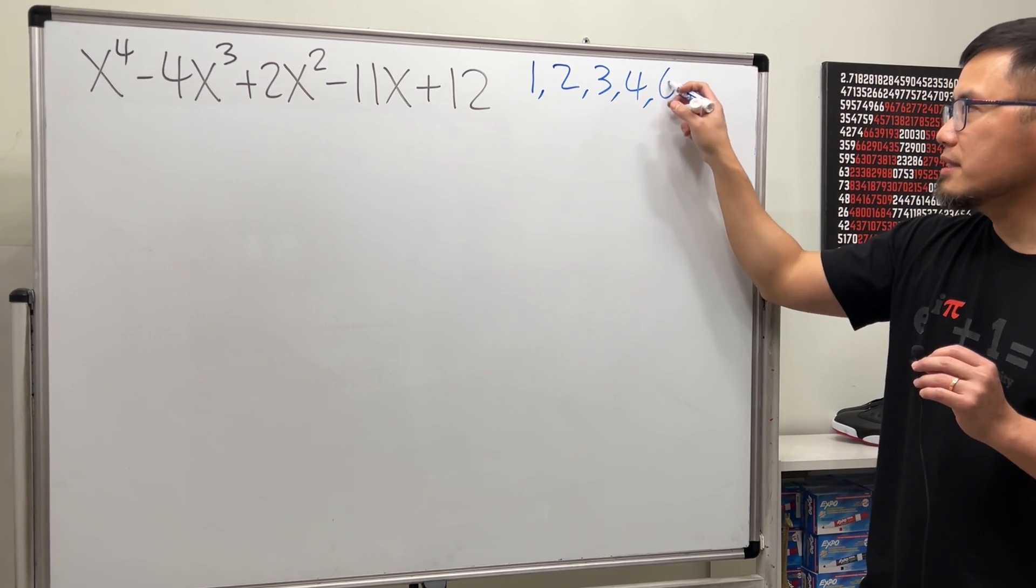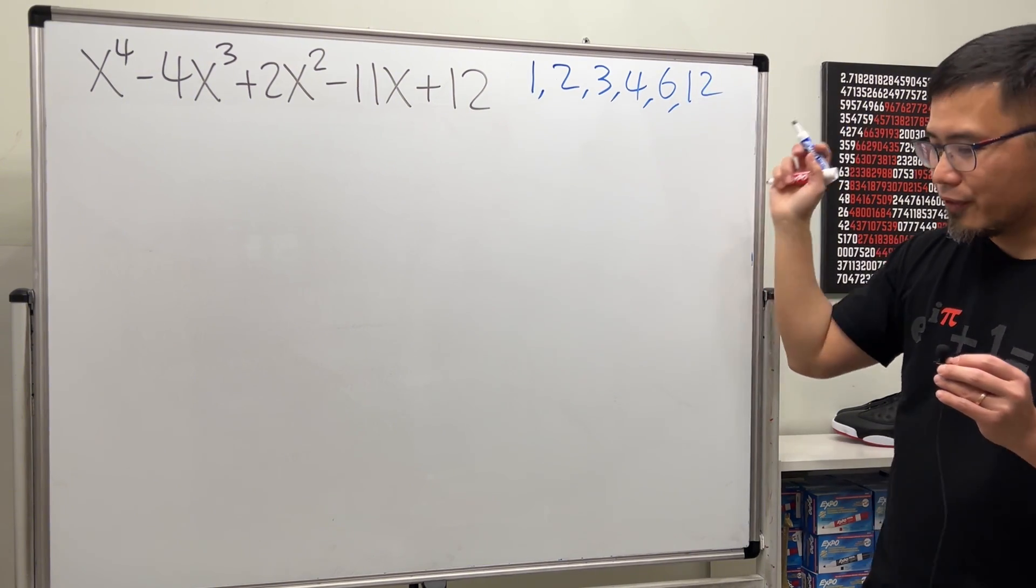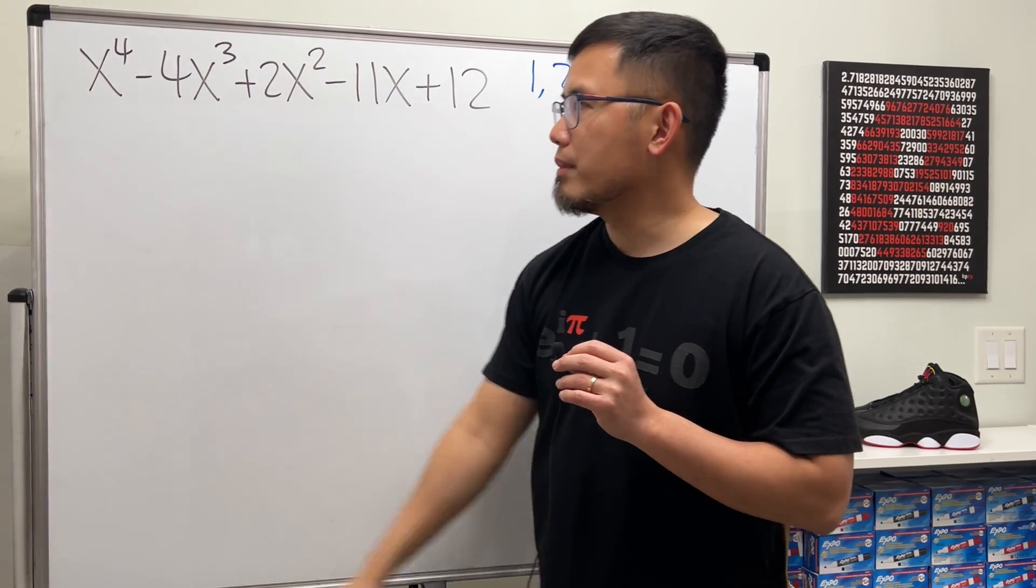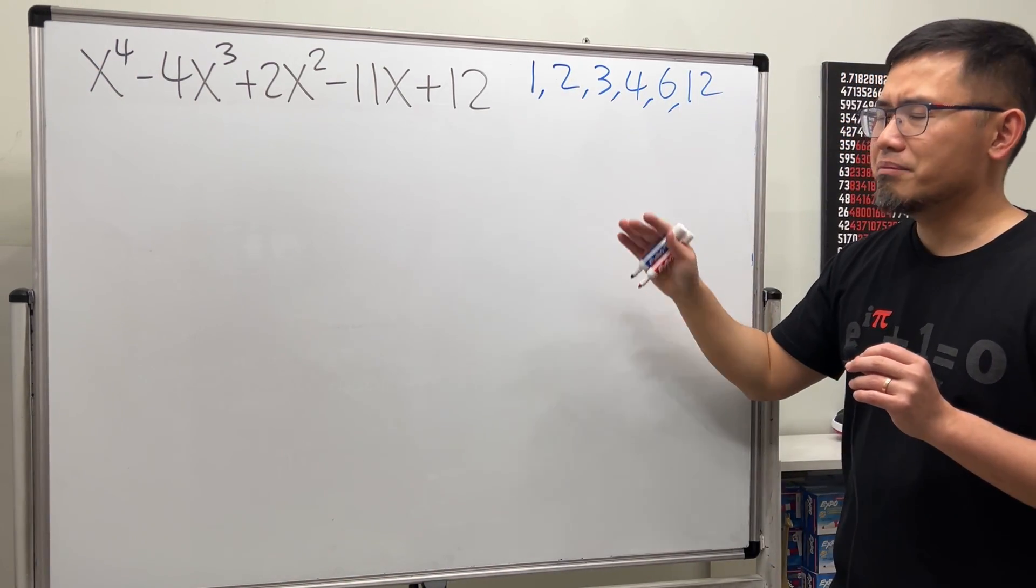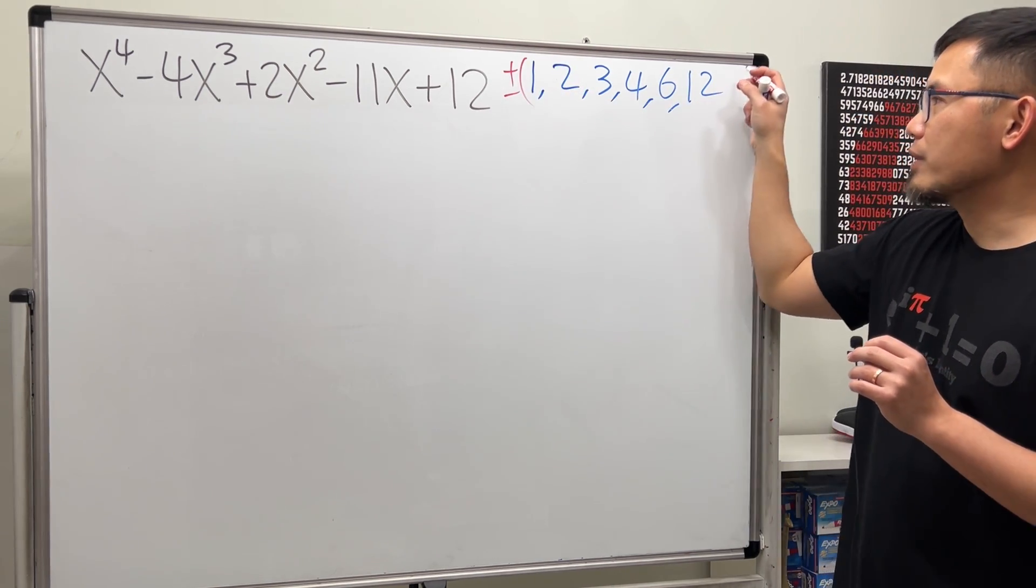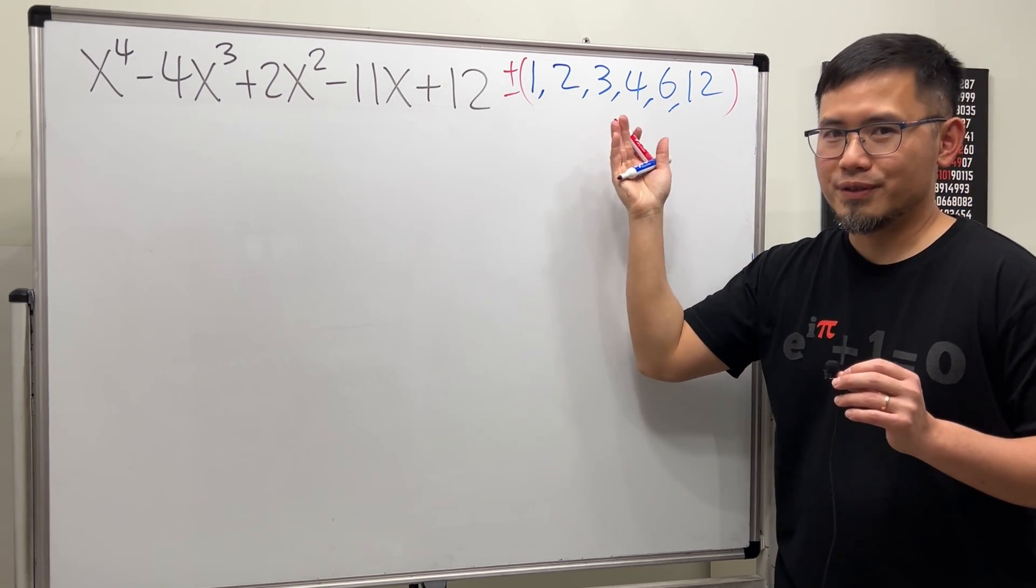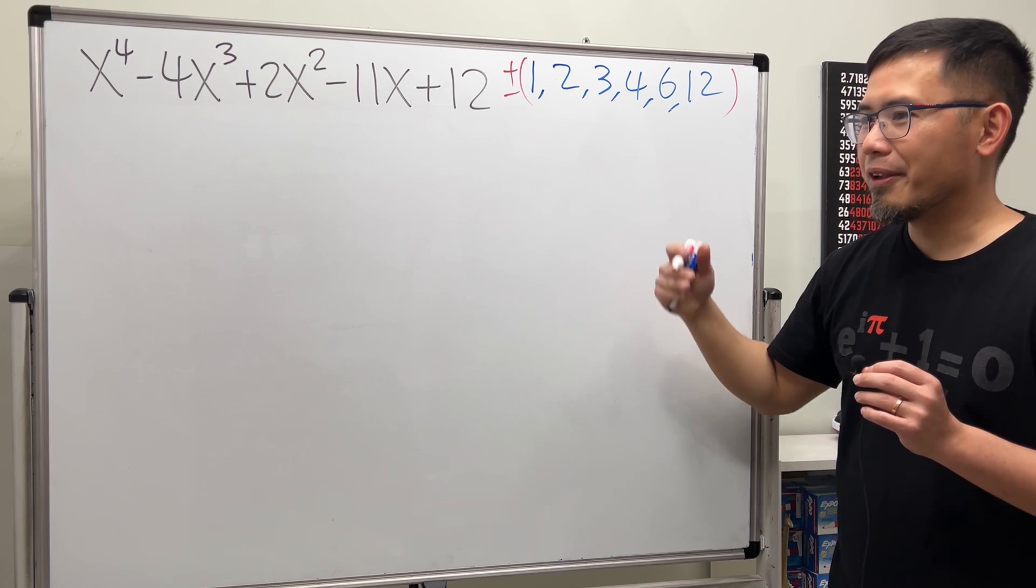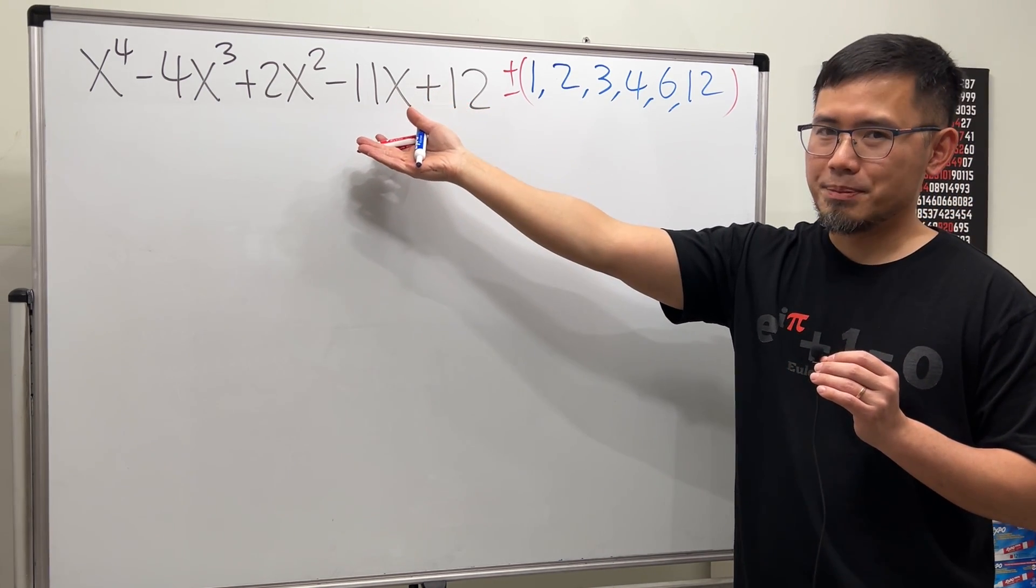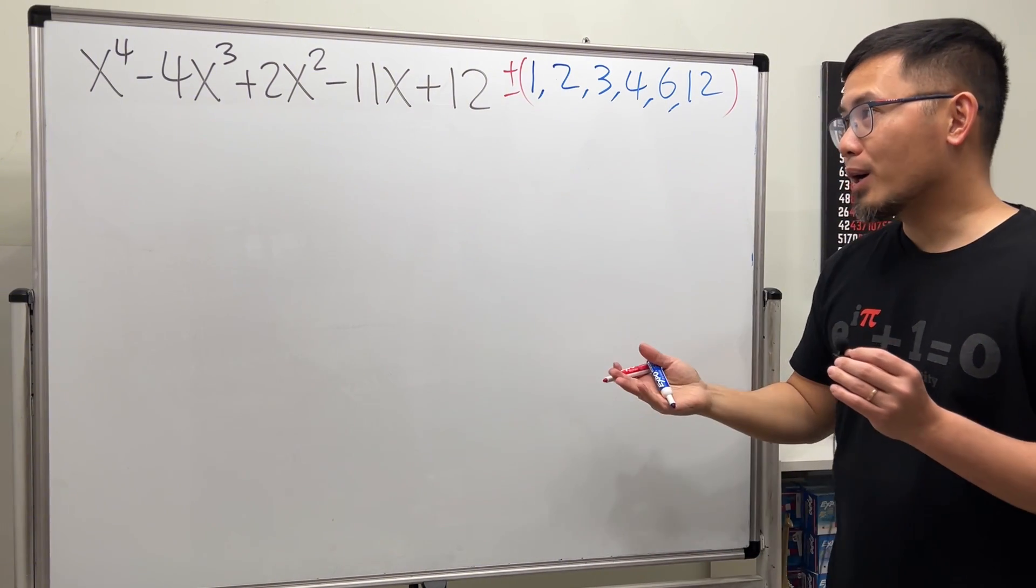And then we look at the coefficient of the leading term which is 1. Divide everybody by 1, doesn't matter, but we will also have to consider both the positive and the negative version of all of these. Right here are all the possible rational zeros of this polynomial, so what we are going to do right now is just pick our lucky guess.